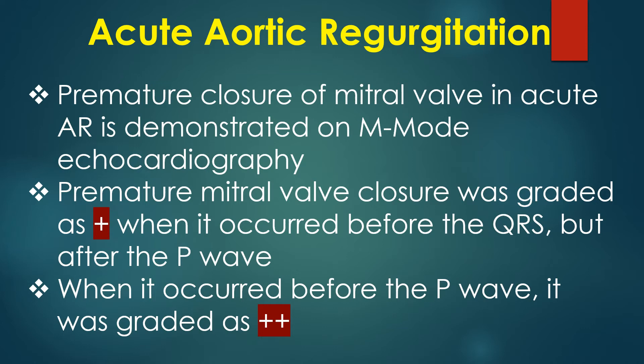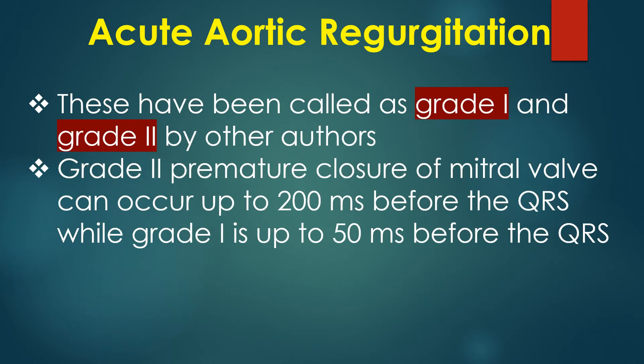Premature mitral valve closure is demonstrated on M-mode echocardiography. It was graded as plus (grade 1) when it occurred before the QRS but after the P wave, and as plus-plus (grade 2) when it occurred before the P wave. Grade 2 premature closure can occur up to 200 ms before the QRS, while grade 1 is up to 50 ms before the QRS.